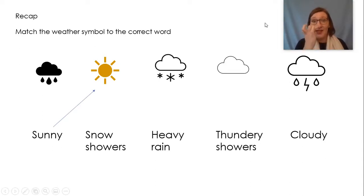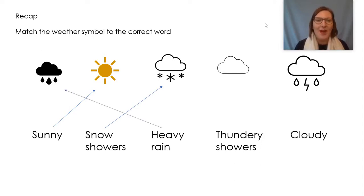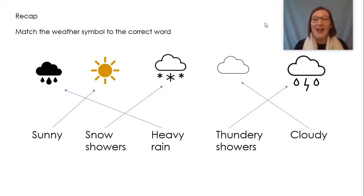So that one was sunny. Did you get that one? Brilliant. Then we have snow showers — that was that one. Heavy rain is over there. Thundery showers is there. And the last one is cloudy. How did you get on with that? Did you get them all right?